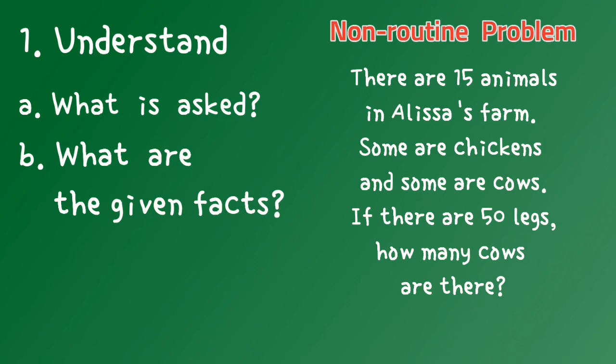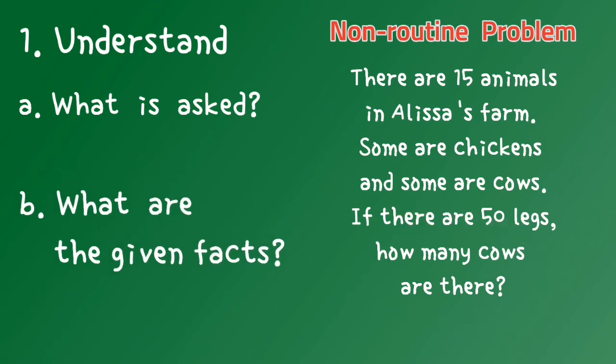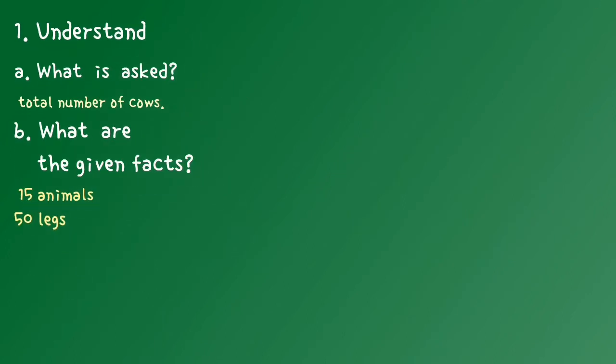So what is asked in the problem? You can answer this, or if you can construct a sentence or phrase for the answer, the idea will be like this. What are the given facts? 15 animals and 50 legs. You have to consider that chickens have two legs each and cows have four legs each.